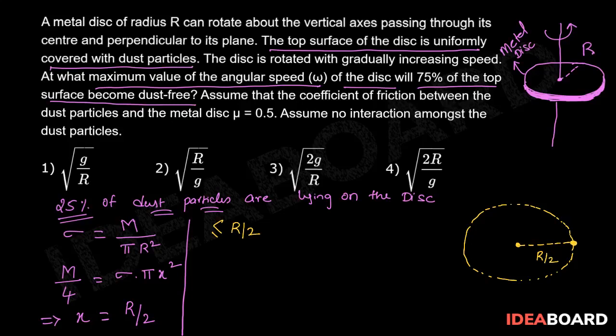Its weight mg acts vertically downward and the normal force given by the surface of the disc acts vertically upward. And frictional force will act towards the center of the circular path traversed by it.